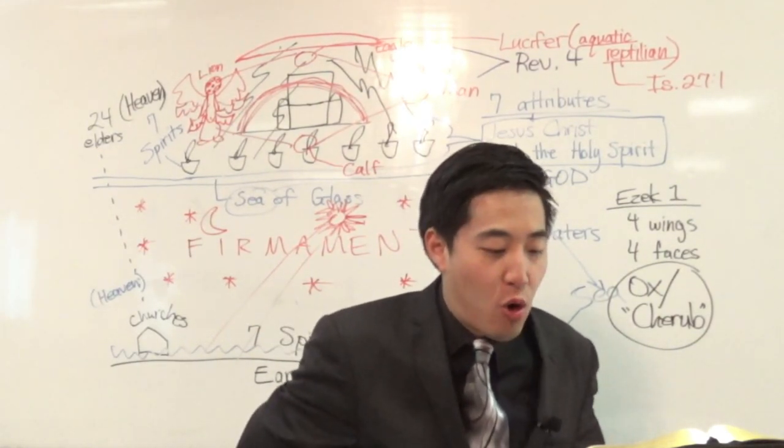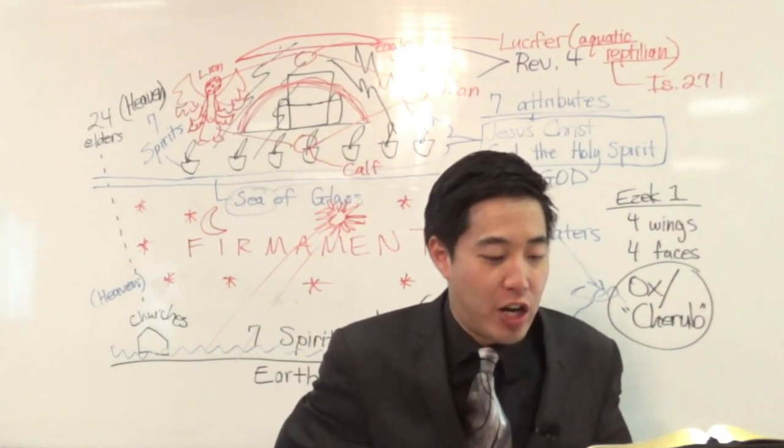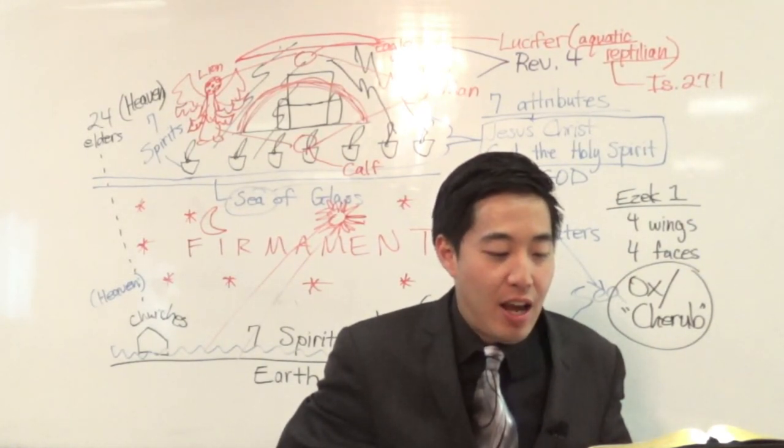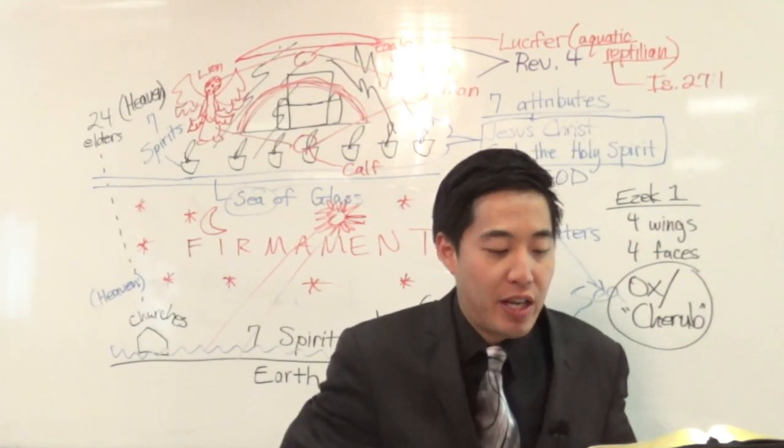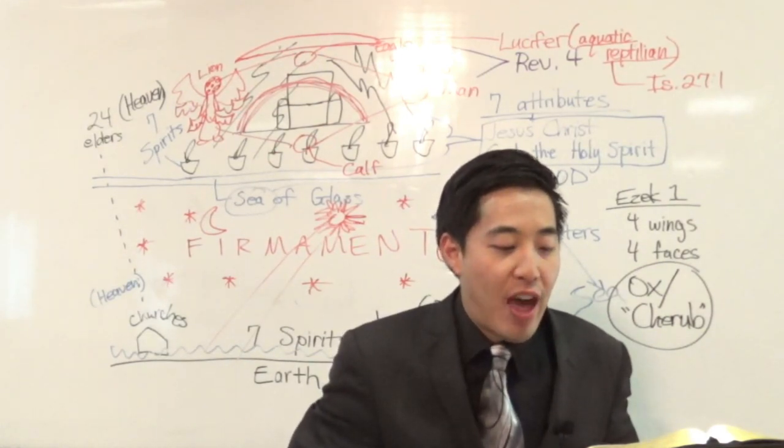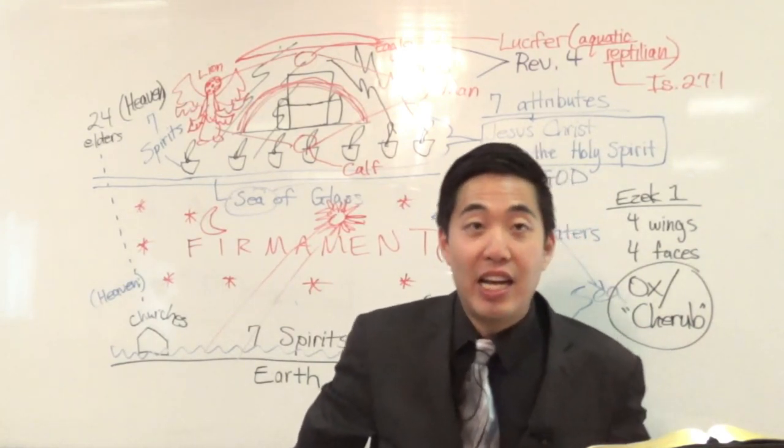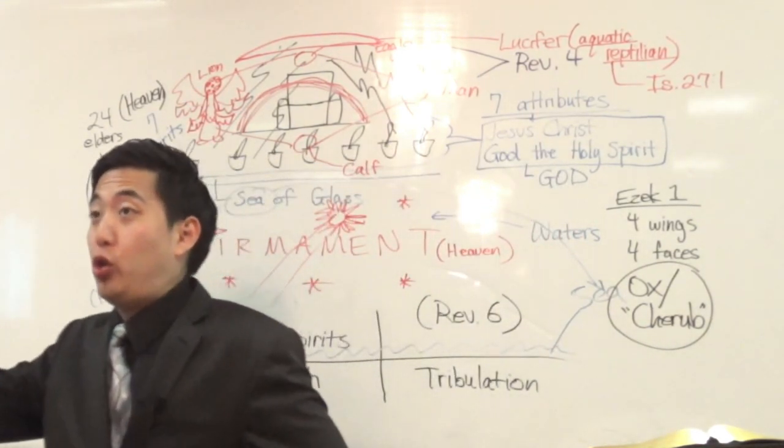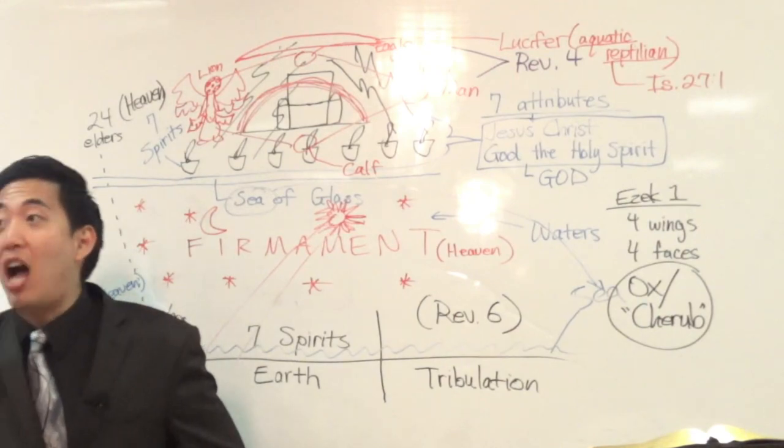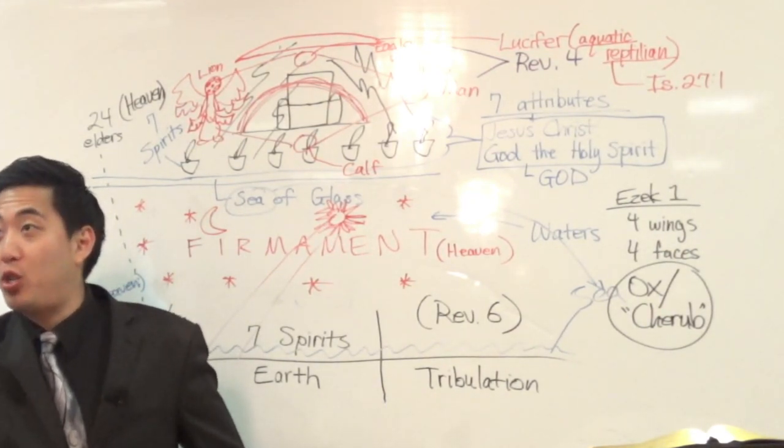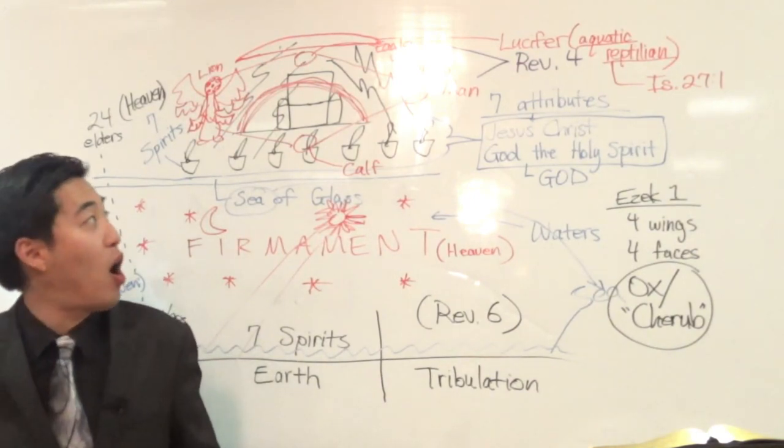Isaiah chapter 27 verse 1. In that day, the Lord with his sore and great and strong sword shall punish Leviathan, the piercing serpent, even Leviathan, that crooked serpent, and he shall slay the dragon that is in the sea. It covered, I told you, it covered those classes of animals. God considers it as one right here. Notice that this is all in reference to the devil right here. See, aquatic reptilian.